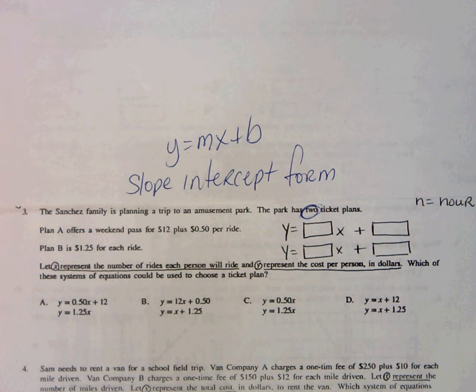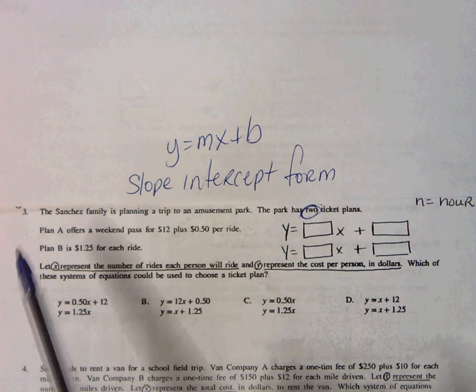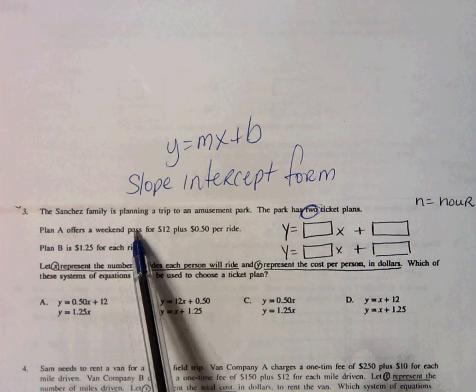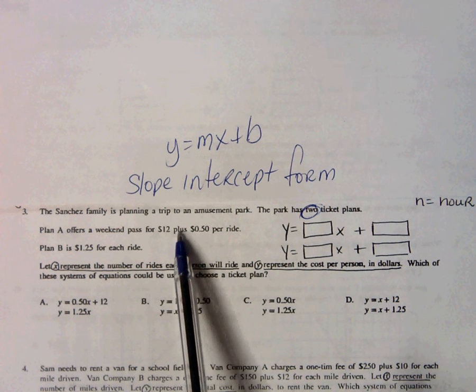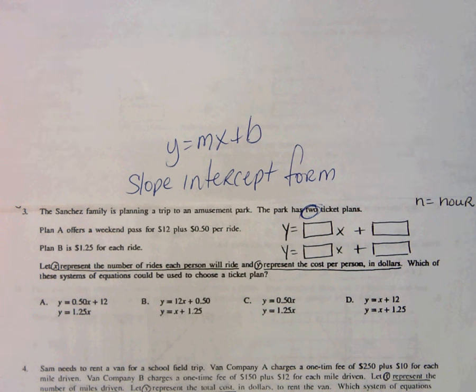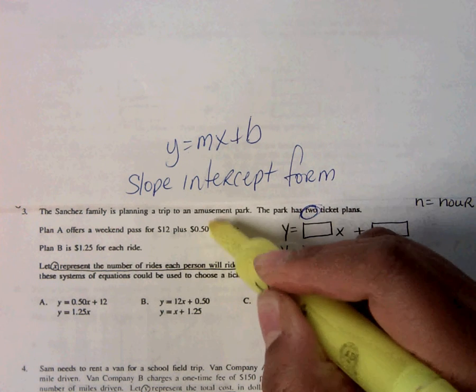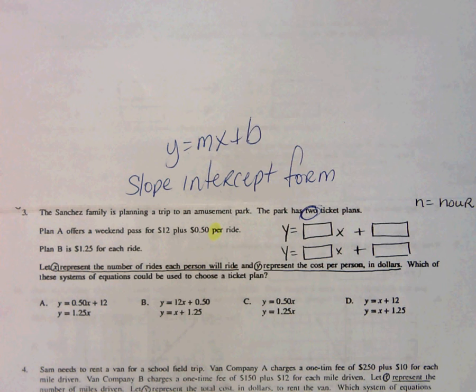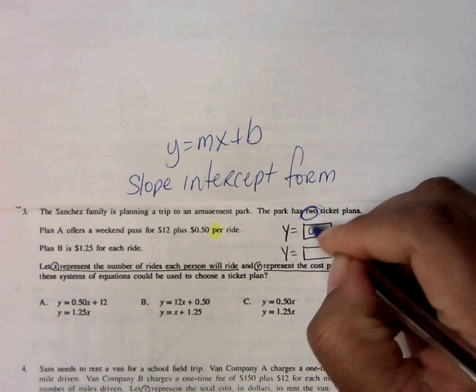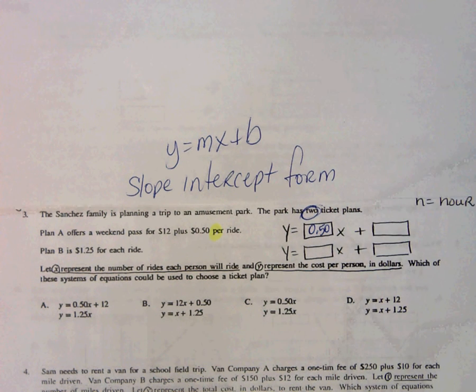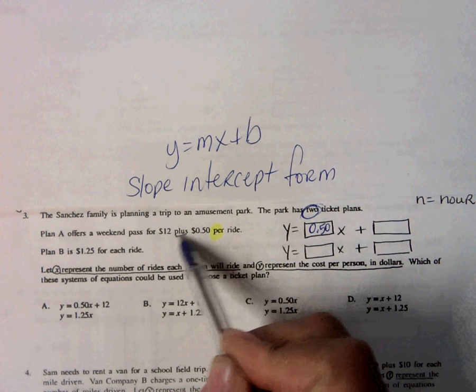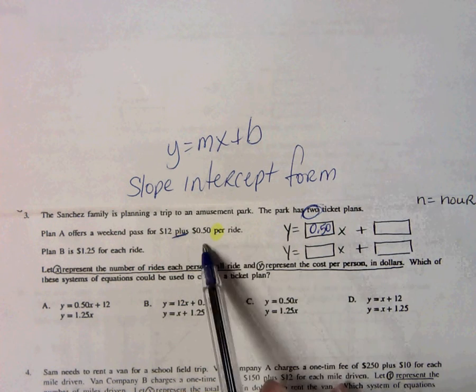Plan A offers weekend passes that are $12 plus 50 cents per ride. What word are we looking for to tell us m? That's correct, per. Per tells me 50 cents is m. The 12 needs to be added to 50 cents a ride.